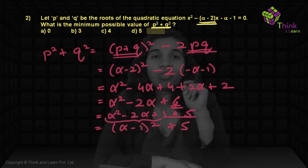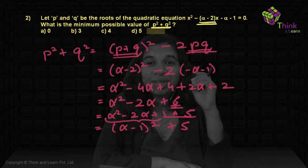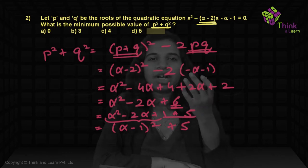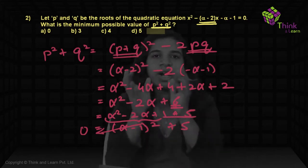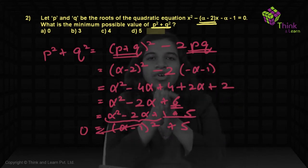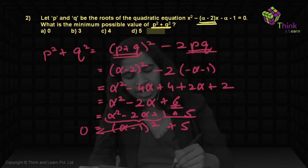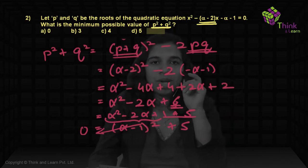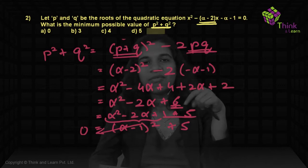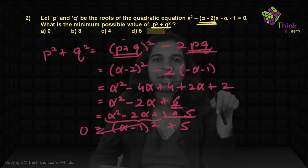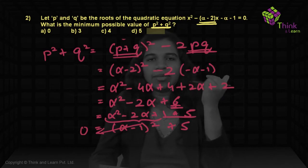Whenever you have questions on minimum value and you see a quadratic, make it a perfect square plus some constant value — like (α − 1)² + 5 here. The perfect square has a minimum value of zero and the other part is a constant, giving us the minimum value of 5.